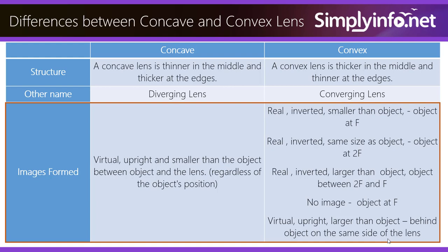For convex, the image is real, inverted, and smaller than the object when the object is beyond 2f. It is real, inverted, and the same size as the object when it is placed at 2f.